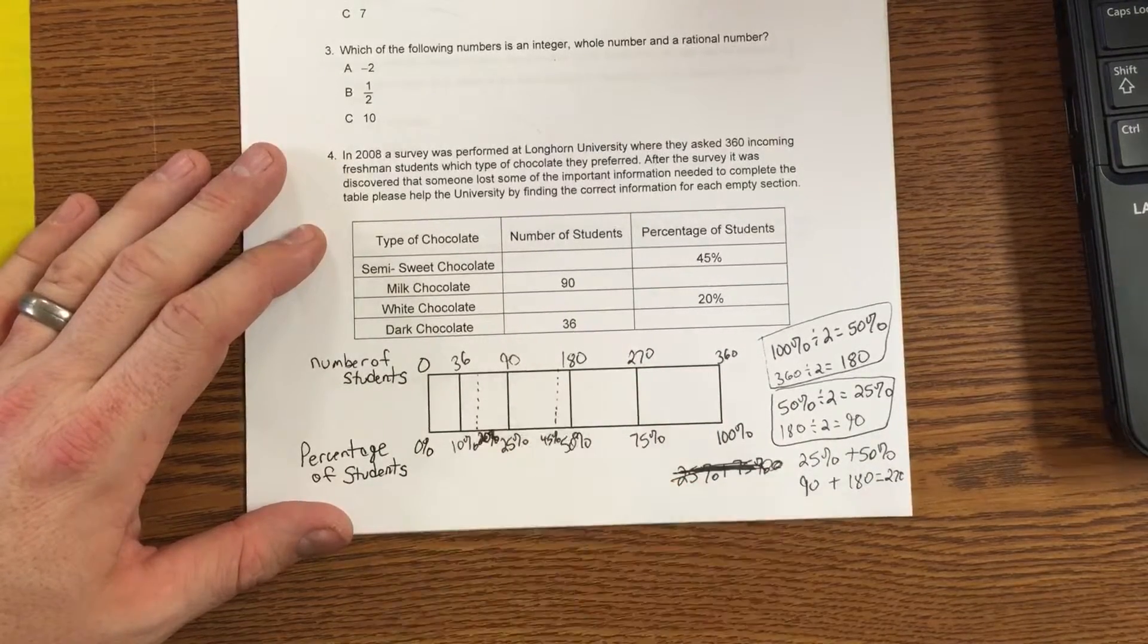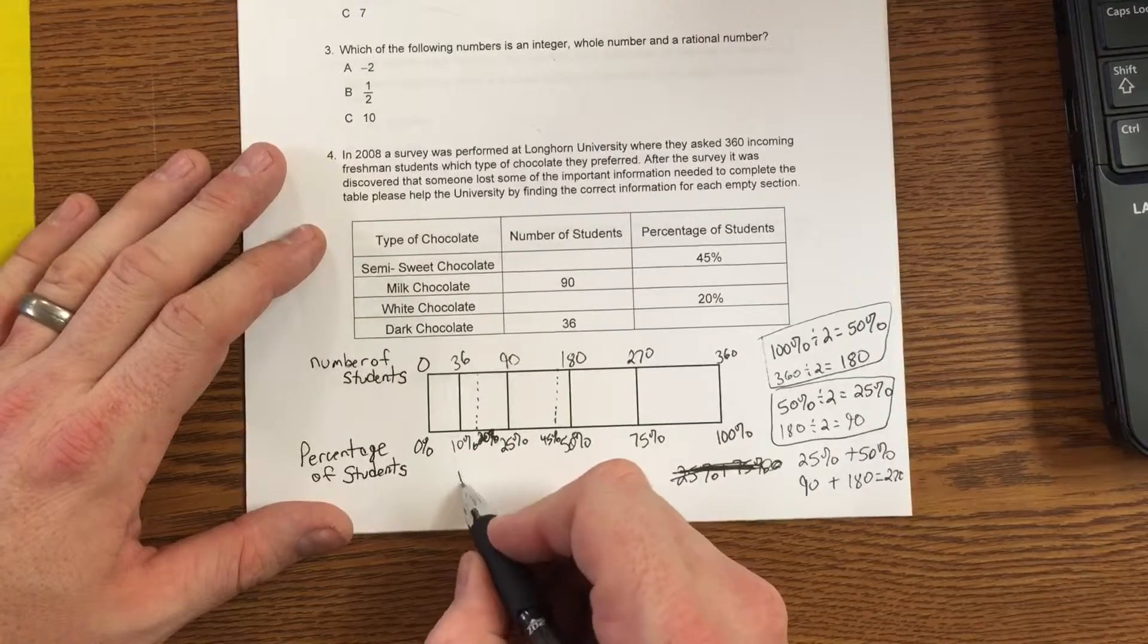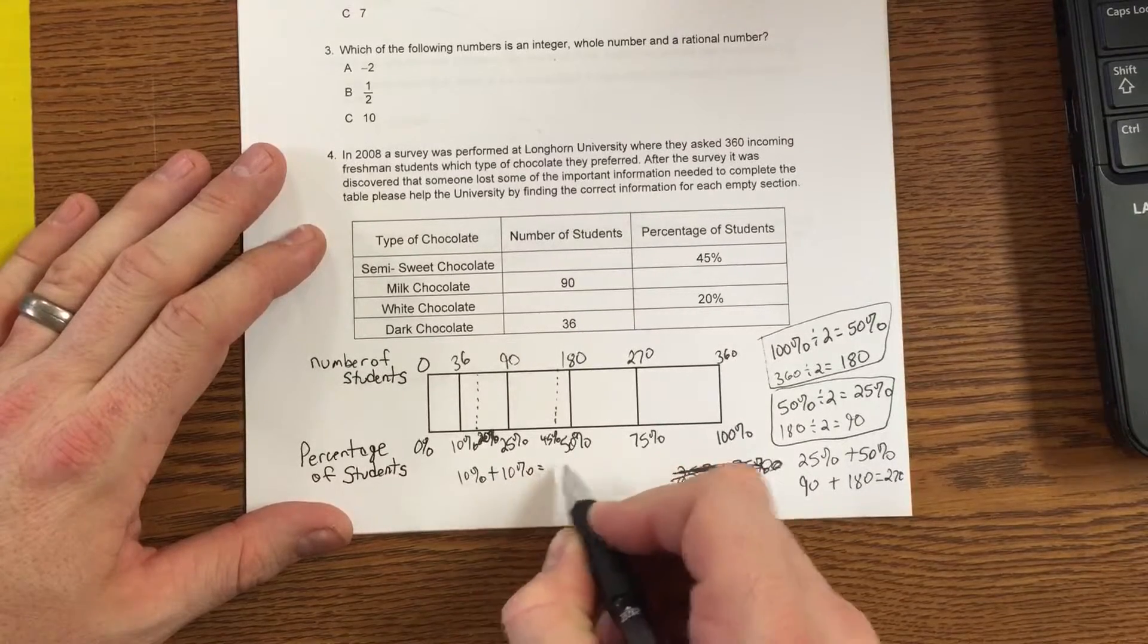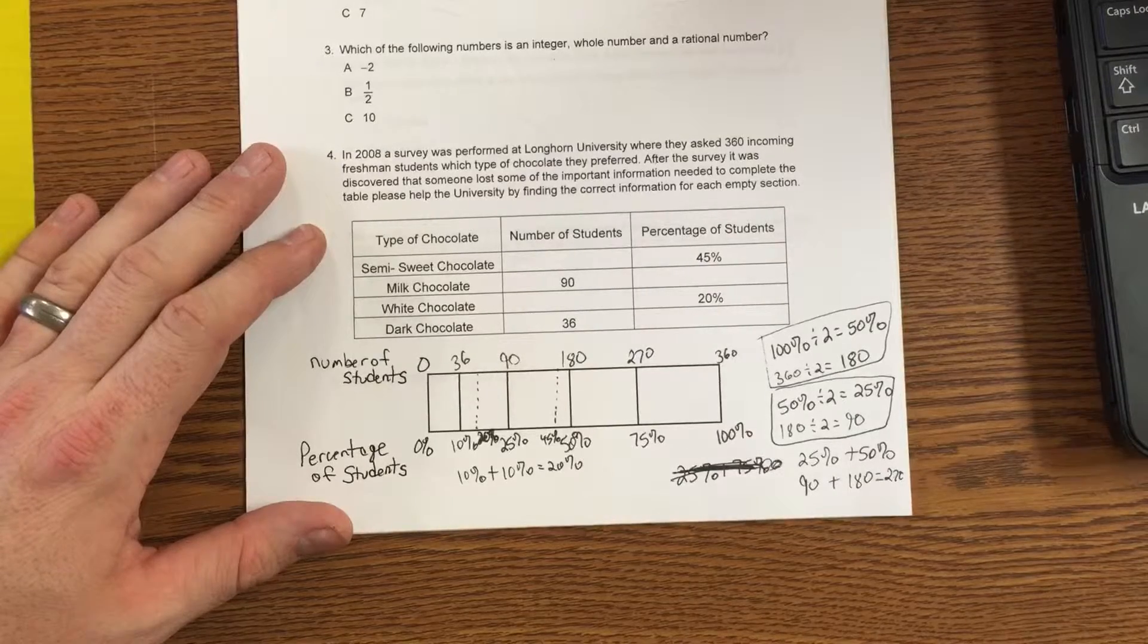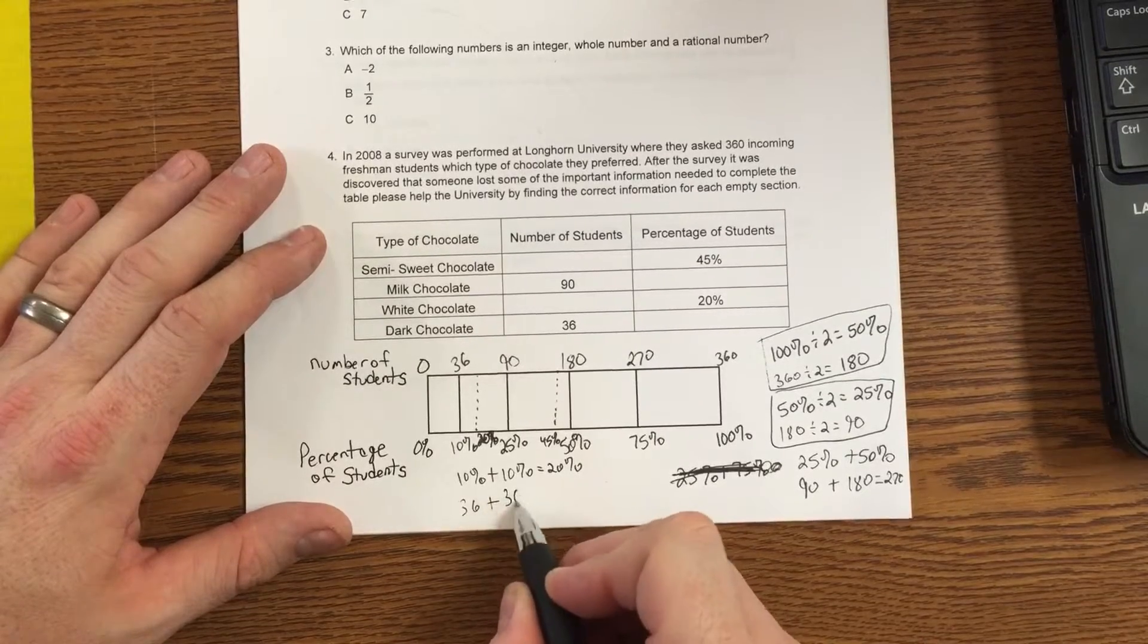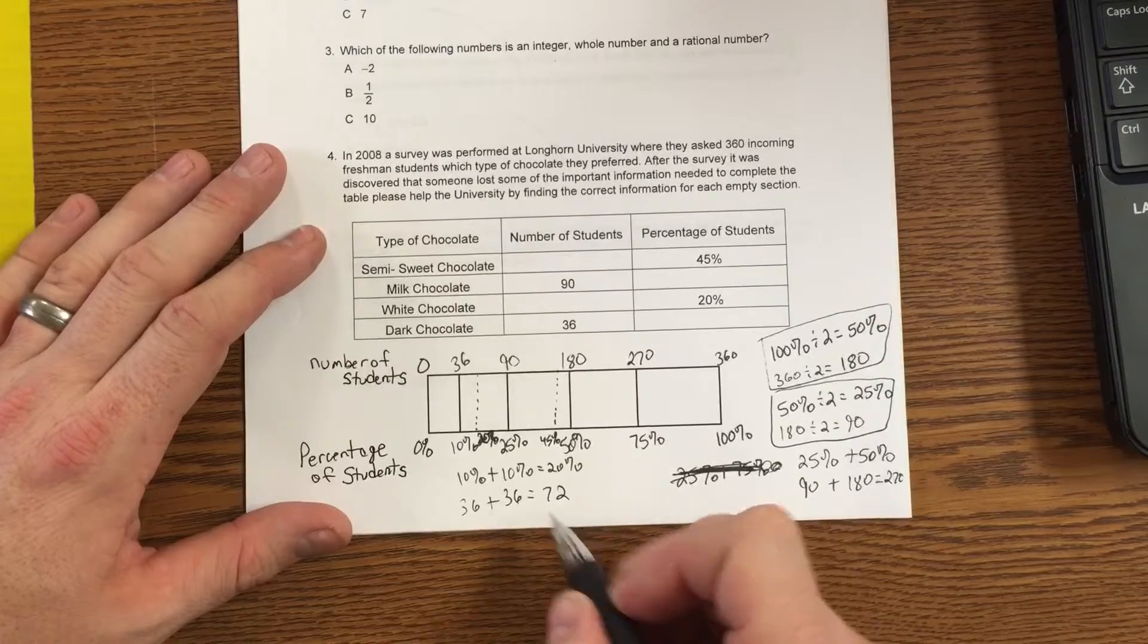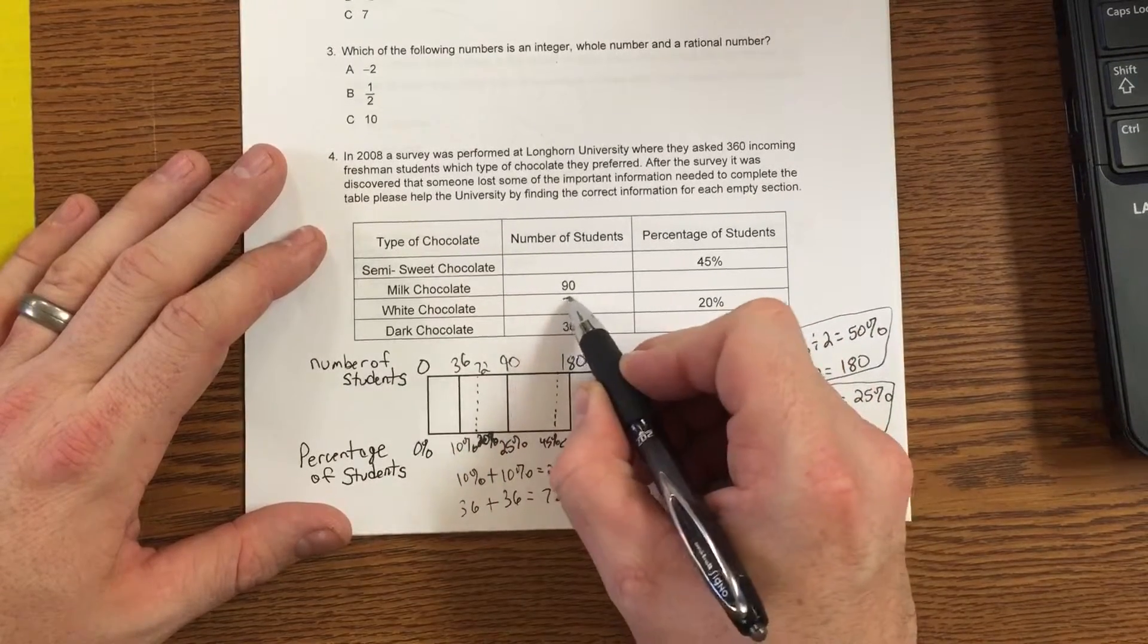I need to know what these two dotted lines are. Well, 20% is very easy to find. 10% plus 10% is 20%. That's very easy. 10% is worth what? 36. 36. That adds up to be 72. So 20% is 72.